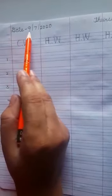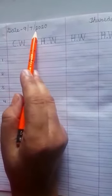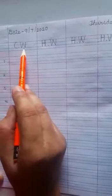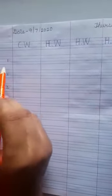Now you write down the date on the top and today's date is 9th July 2020 and the day is Thursday. Then you write down CW and HW like this. Afterwards you write down the numbers 1 to 5.